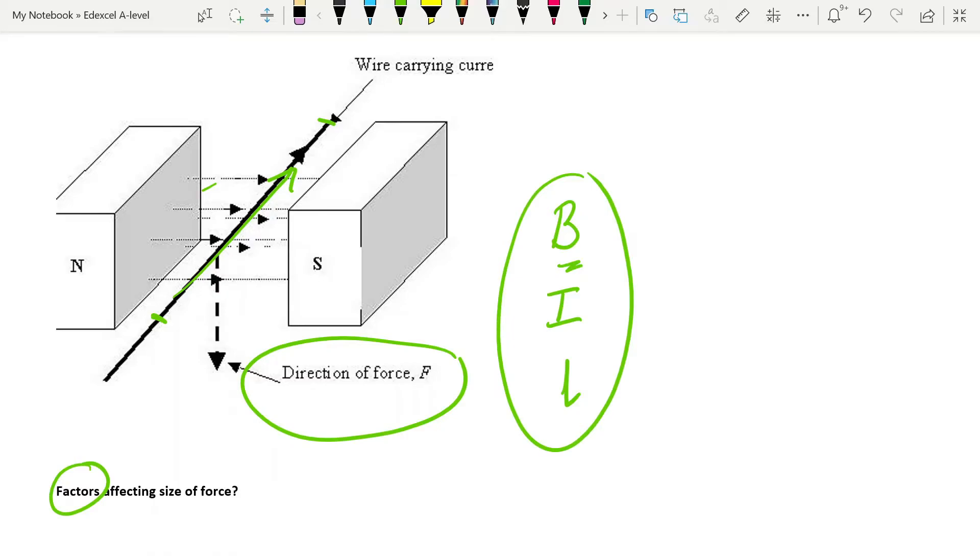And the equation that governs this then is F is equal to BIL. What you have to remember of course is F is equal to BIL when the wire is perpendicular to the field because the angle between the field and the wire then is 90 degrees, and the sine of 90 degrees is one giving you the maximum value for your force.